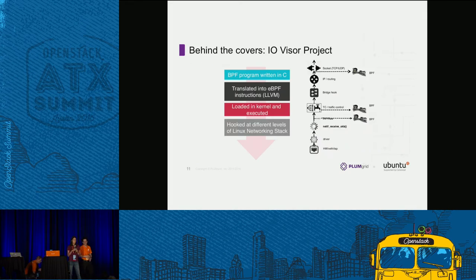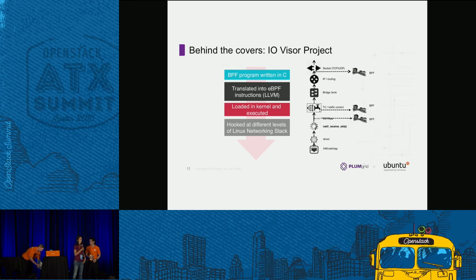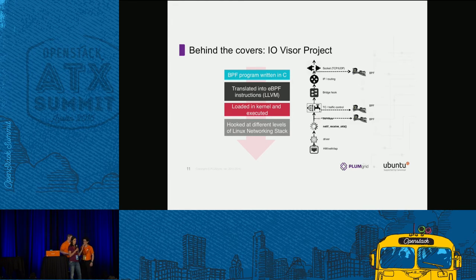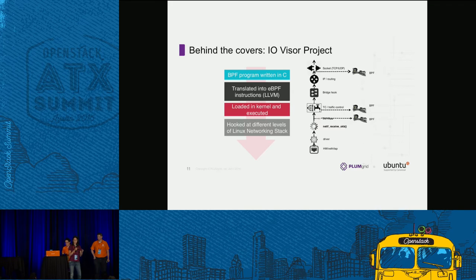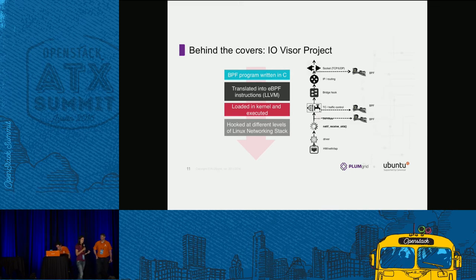One piece of technology I want to mention sits under the covers of the PlumGrid solution — it's an open source component we contributed back into the Linux community. It's now a Linux collaborative project called the IO Visor. You'll hear me refer to this throughout the entire session because the IO Visor is what makes the whole VCPE use case possible. It's how we bring programmability and extensibility to the Linux kernel — the ability to define programs that do things like bridging, routing, storage, or security, and at runtime insert those into the kernel.